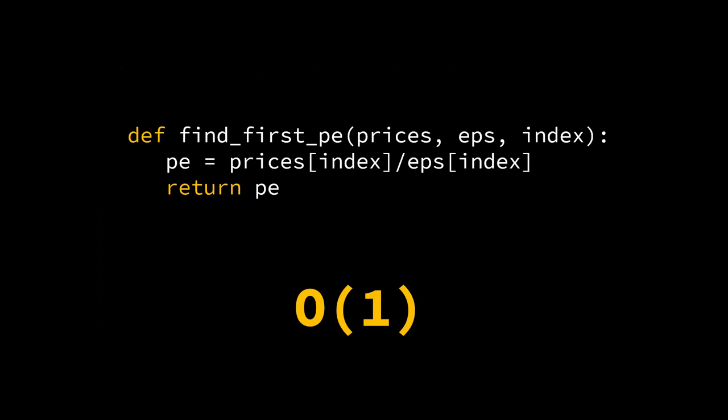This is the example of a function whose complexity is order of 1. Let's say you're trying to find the P/E of the first stock in your list. So here I'm getting the stock price in a list, I'm getting EPS of different stocks in the list. So these two lists have price and EPS for different stocks. There could be 10 stocks or a million stocks, but when you supply an index it's going to do a constant operation. So it doesn't matter what is the size of price or EPS, it could be 10, it could be million. The time execution is going to remain constant, hence the Big O complexity of this program is order of 1.